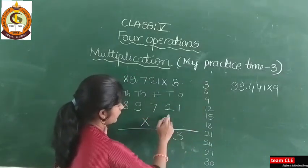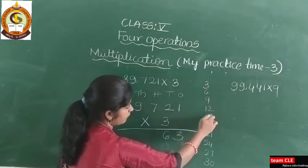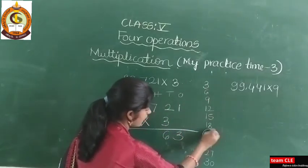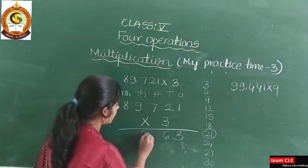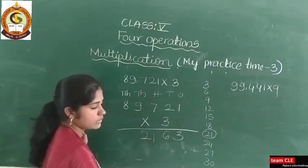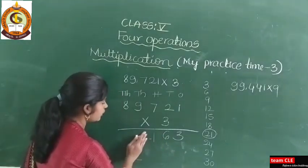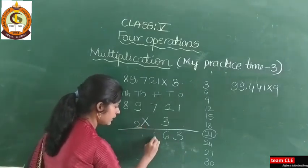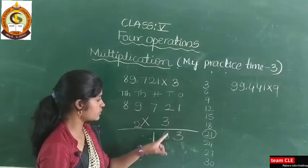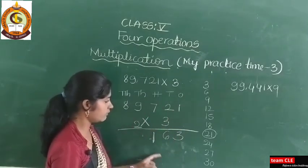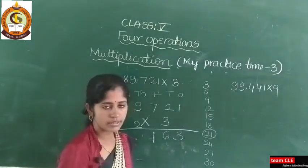3 ones are 3, 3 twos are 6, 3 sevens are 21. Don't write 21 directly here — that is completely wrong. You need to give a carry. Keep the 2 as carry and write 1 here. So 3 sevens are 21 — carry 2, write 1. There is no need to write the tables; I wrote them for your understanding.